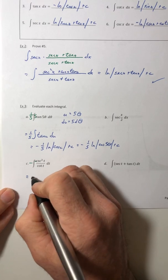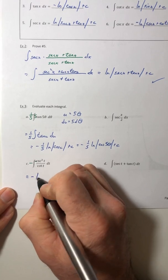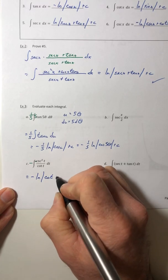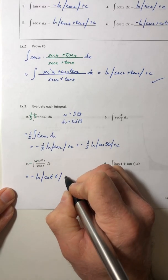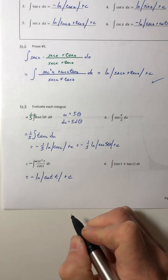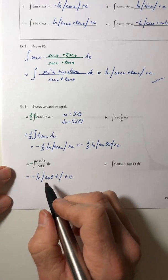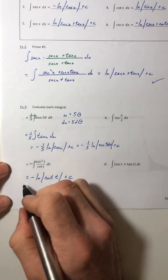So I end up with negative ln absolute value of cotangent of t plus c. Now you can rewrite this a little bit, because remember logarithms have other properties.